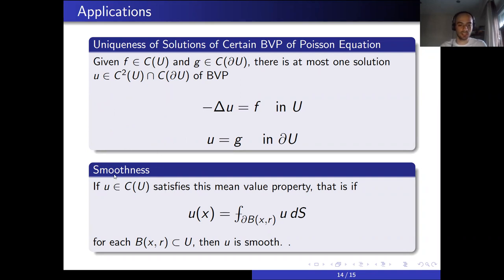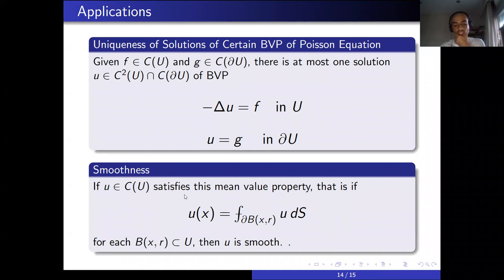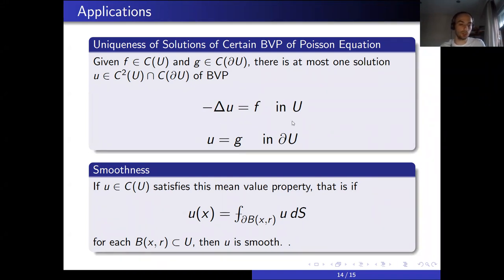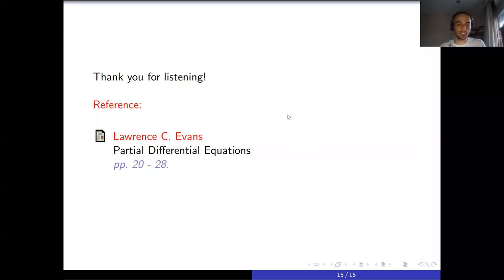This next result is not a direct application of the mean value property, but it contains it. If U is any continuous real-valued function that satisfies the mean value property — that is, for each ball contained in capital Ω we have this equality — then U is actually infinitely many times differentiable. There is no assumption of differentiability, but we arrive at this interesting conclusion.